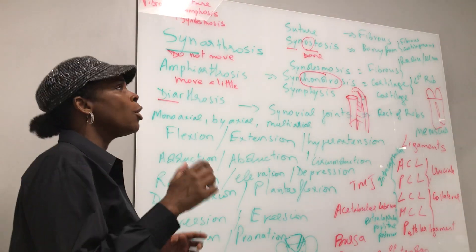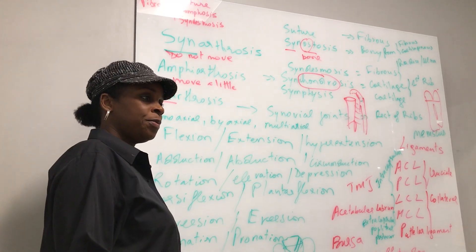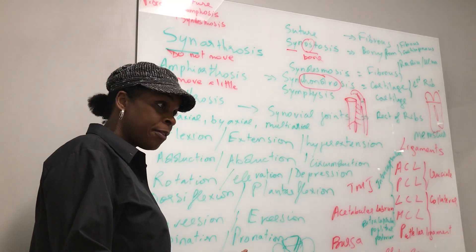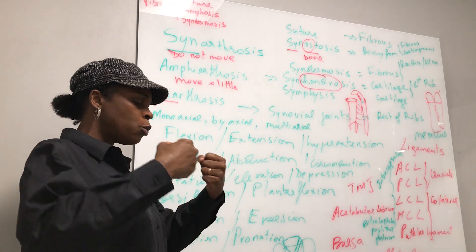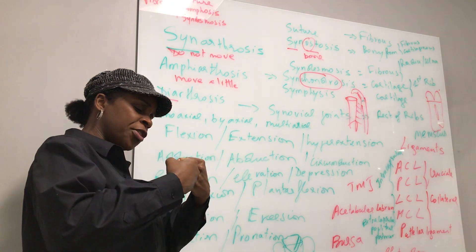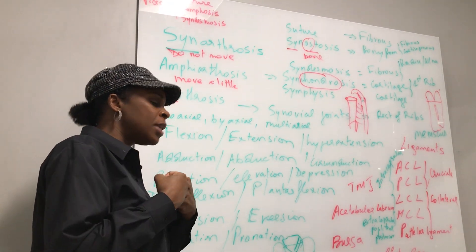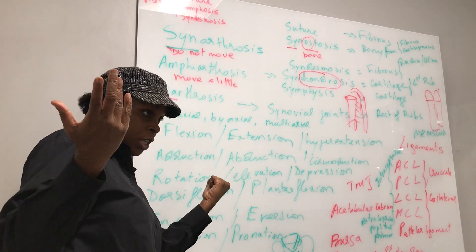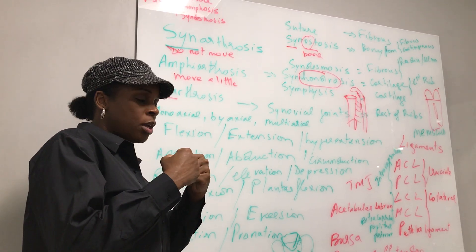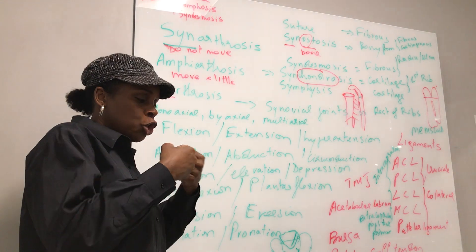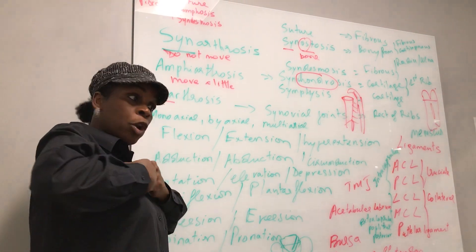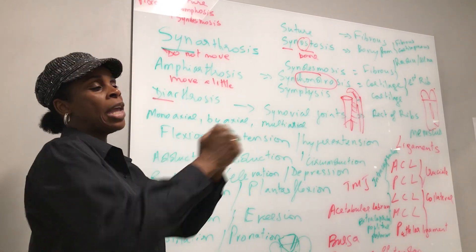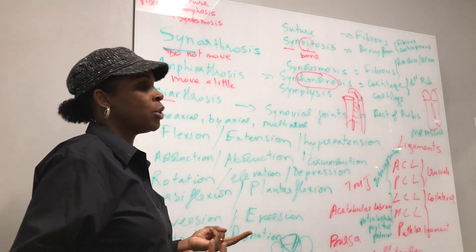Now, how do we classify joints? We have different ways to classify things in life, but for joints, if two things come together, one way to classify them is what is between them. The second one could be how do they move — do they not move at all, do they move a little tiny bit, or do they move about? So those are the two ways we classify joints.